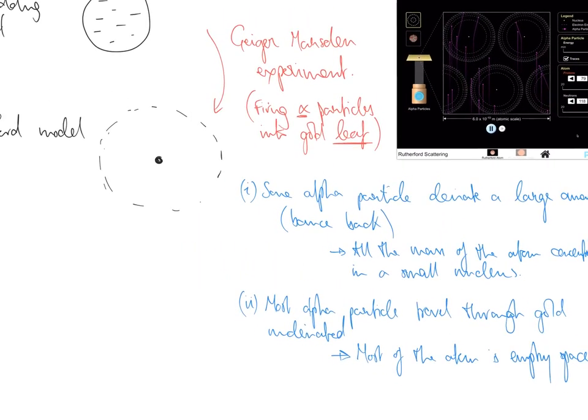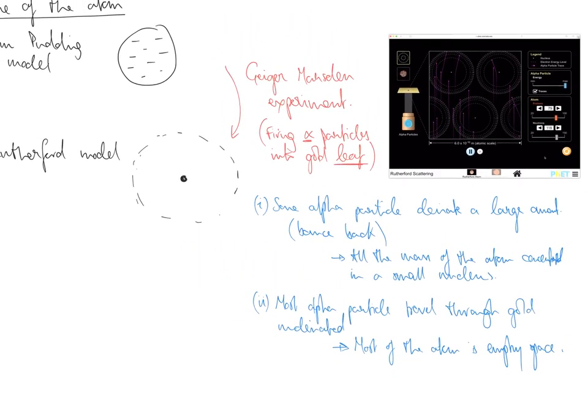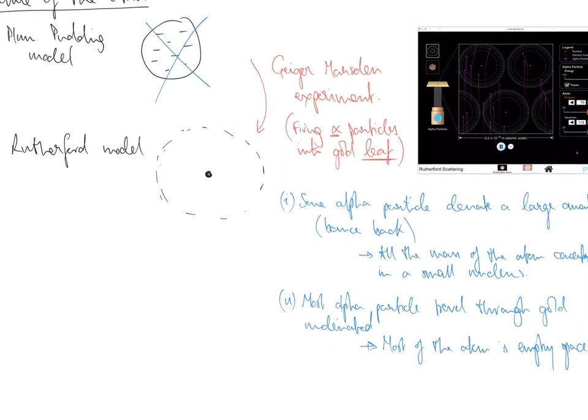And those two ideas meant that this model would not explain those results. What we did have, however, was this new model that some of the alpha particles deviate by a large amount. So, all of the mass were inside a nucleus. So, we have a nucleus, point one. And point two, the electrons float around the outside, thereby most travel straight through undeviated.